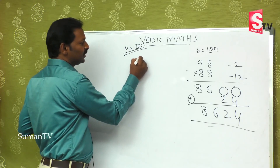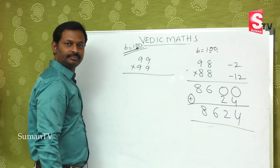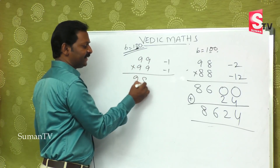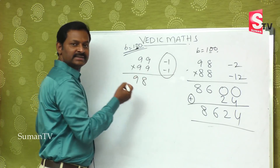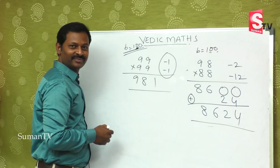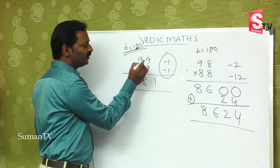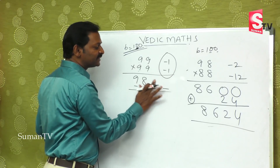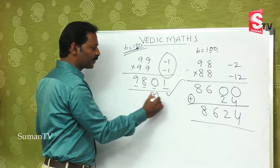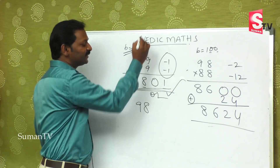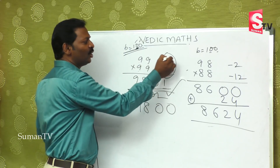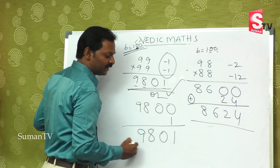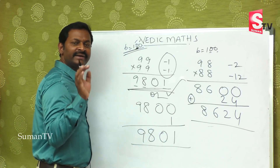Suppose 99 is multiplied by 99. Each is minus 1. Cross-subtract: 99 minus 1 is 98 — that is the first part. Then 1 times 1 is 01 — that's why the answer is 4 digits. Final output: 9801. Do you understand? Not even 10 seconds — that's how fast you can do it.